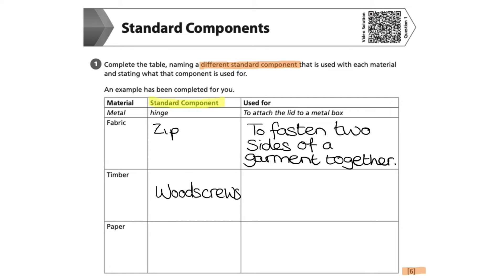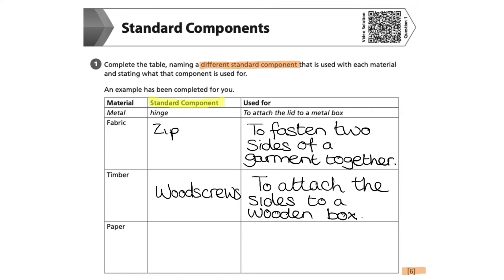We can now consider timber as the material area. For some of you, this might not be your specialist area; however, you do need to know some knowledge about all materials for this GCSE. Standard components for timber could include brackets, screws, nails, draw runners, knockdown fixings, or wood screws. I'm going to use wood screws as the example. Once you've decided on your standard component, you simply write what it is used for — wood screws are used to attach the sides to a wooden box.